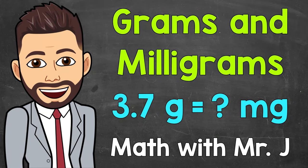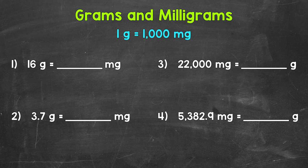Welcome to Math with Mr. J. In this video, I'm going to cover how to convert between grams and milligrams — grams to milligrams, and then milligrams to grams. Now one thing to keep in mind: one gram equals one thousand milligrams.